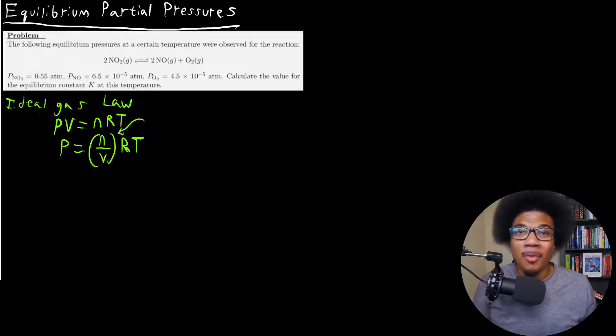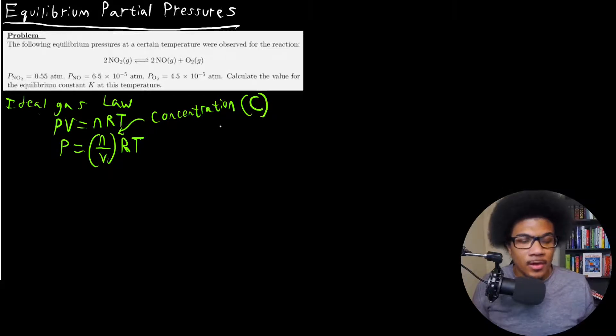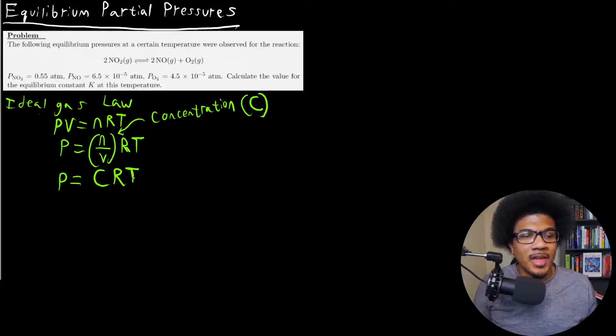So I divided by volume on both sides, and I put this in parentheses because this is the concentration. The number of moles of your gas over the volume, this is the concentration of your gas. If it's in a gas mixture, then this is your concentration. And I'll use a capital C to denote concentration. So you could say that P is equal to CRT, where C is the concentration of your gas in a particular mixture.